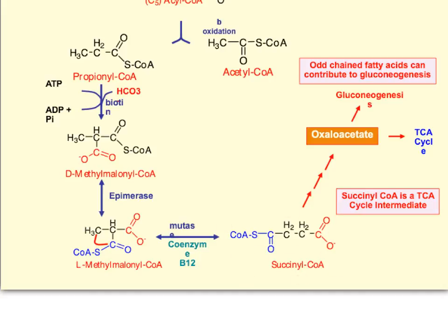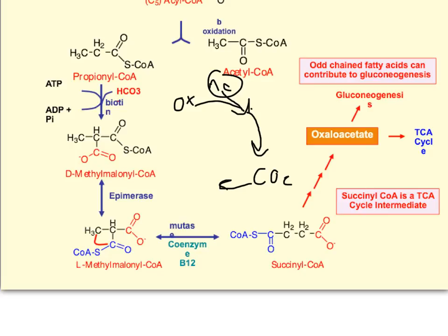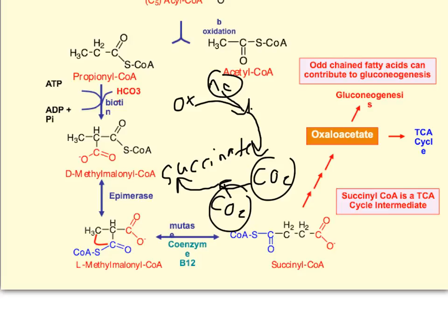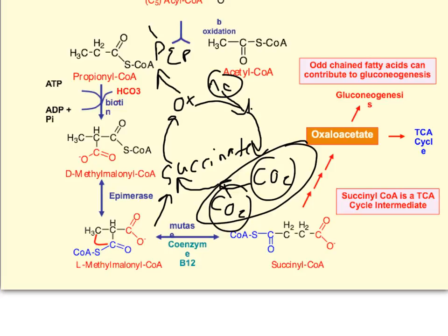Succinyl-CoA is a TCA cycle intermediate. Whenever you go through the TCA cycle, starting with oxaloacetate and acetyl-CoA combining, the two carbons from acetyl-CoA are eventually lost as CO2. This is why acetyl-CoA cannot contribute to oxaloacetate or gluconeogenesis — both of its carbons are lost. You then get to succinyl-CoA, or succinate, which comes after the two carbons are lost. So any time you add more succinate to the TCA cycle, it's going to create more oxaloacetate, which can be converted to phosphoenolpyruvate and go up through gluconeogenesis.